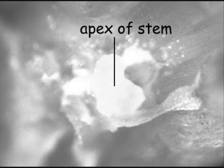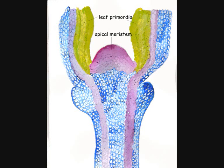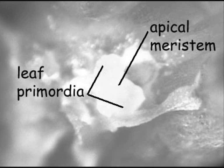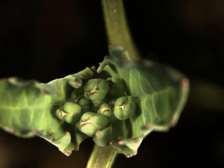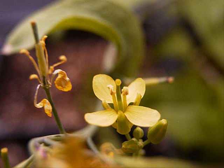At the apex of each growing stem, there are meristematic cells that will give rise to new primordia that will develop into leaves. When specific genes are expressed in the primordia, flowers will develop instead of leaves.